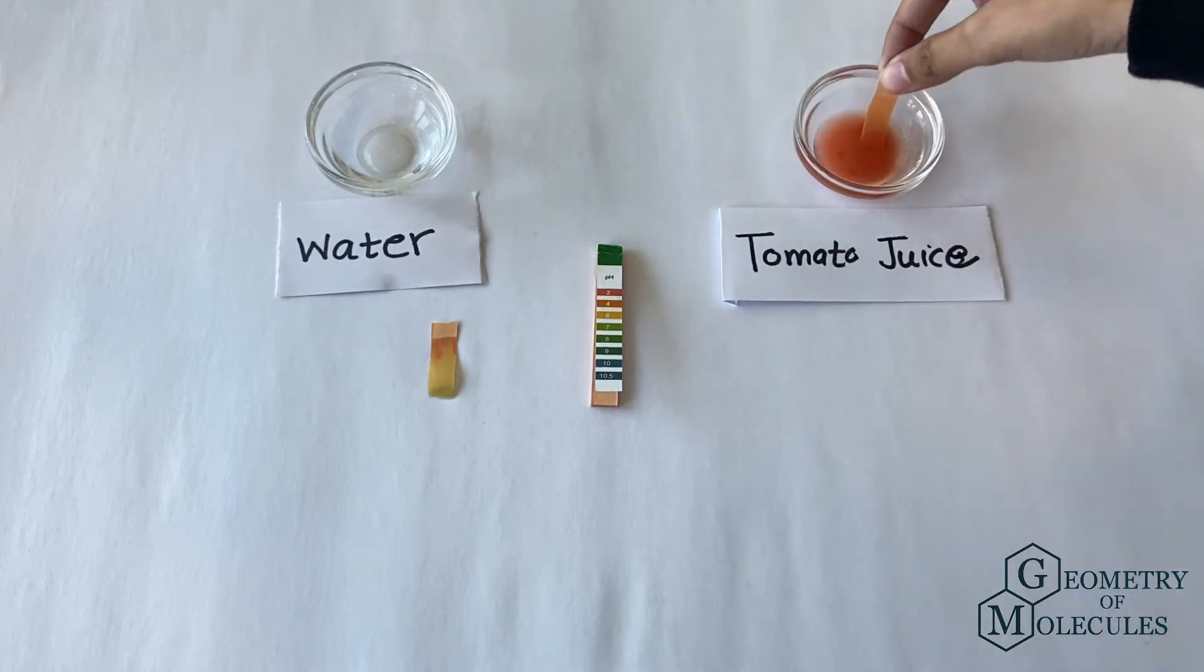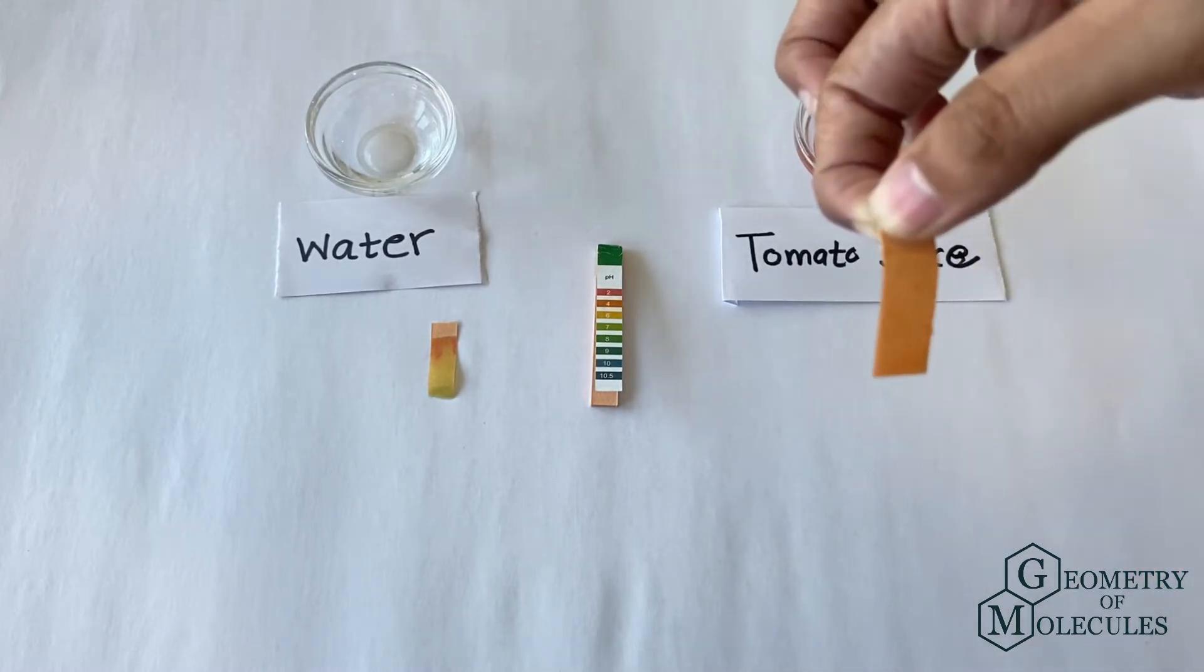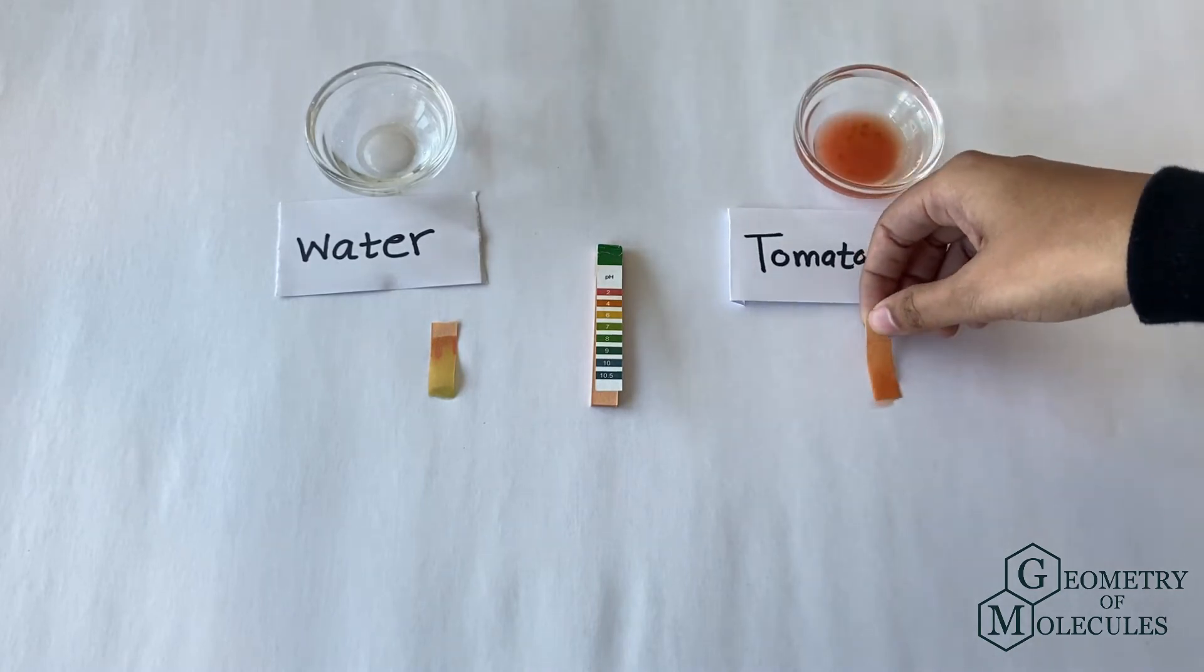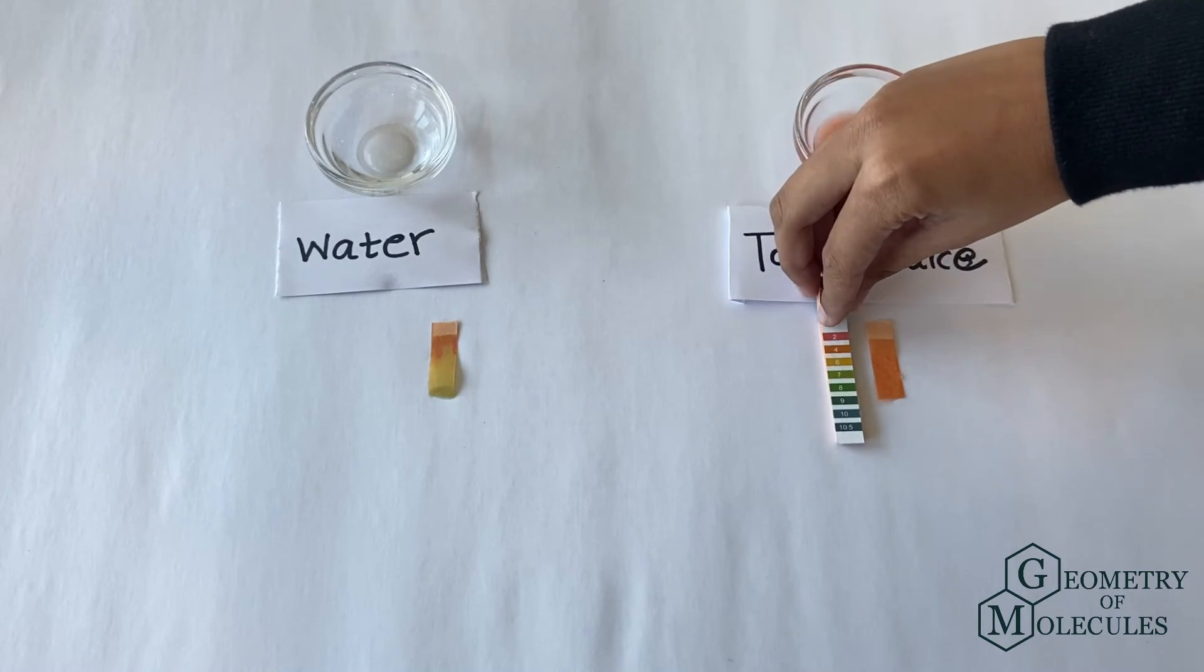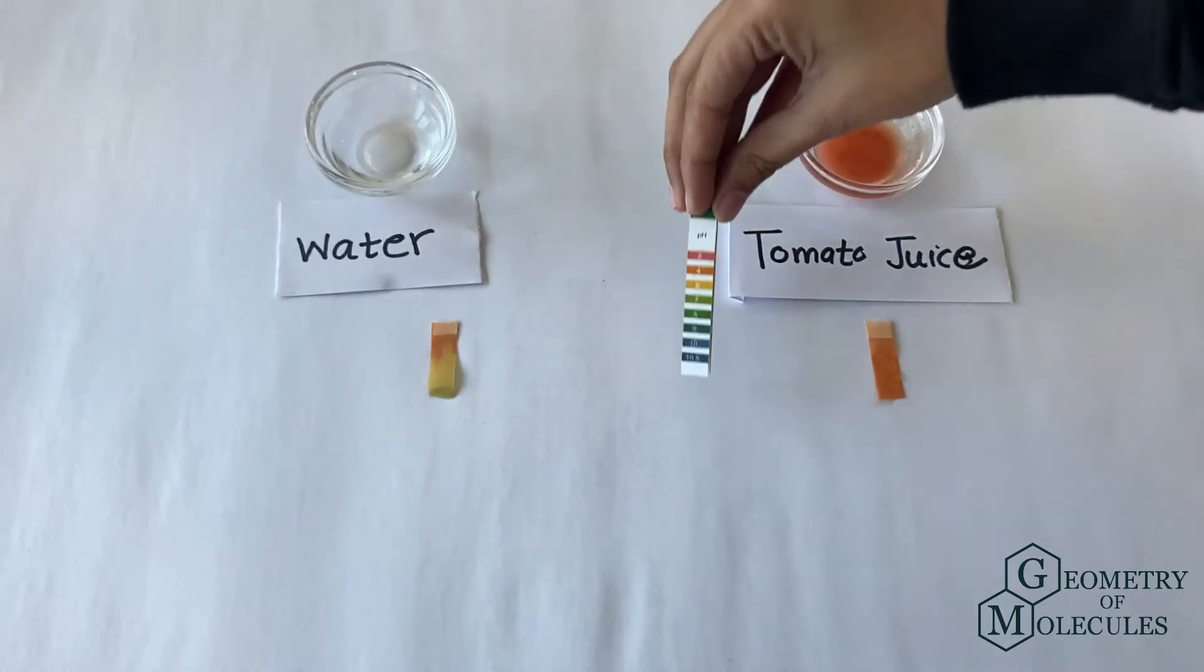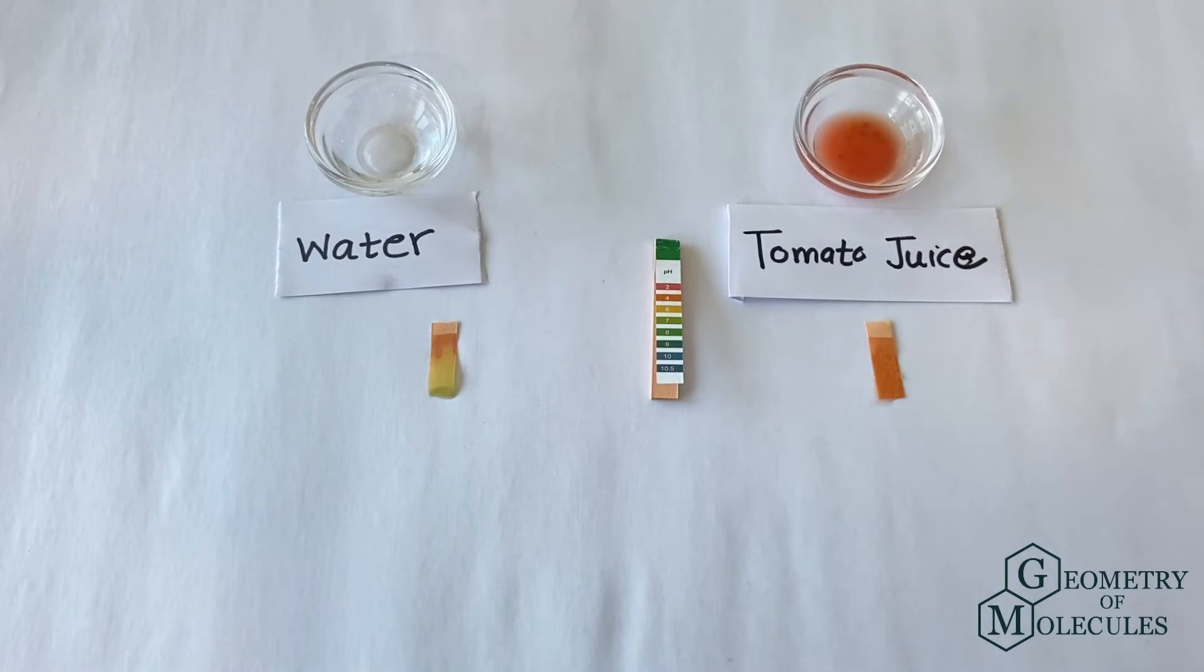The strip has gradually changed its color to a darker shade of orange. That means that tomato juice has a pH of 4 and is acidic in nature. Now let us see what makes tomatoes acidic.